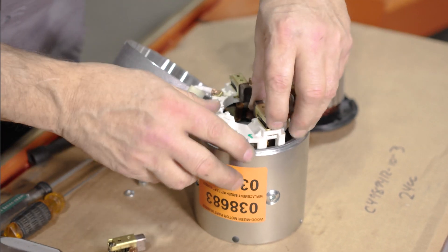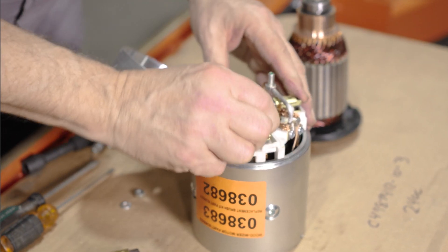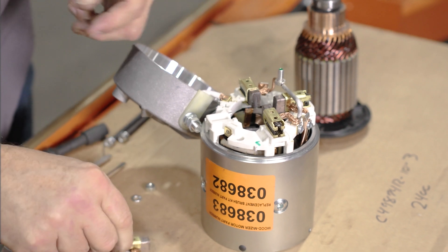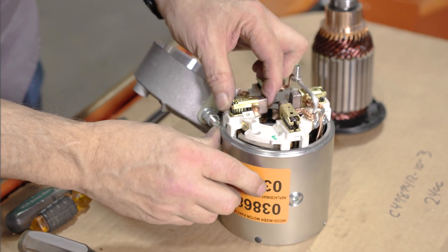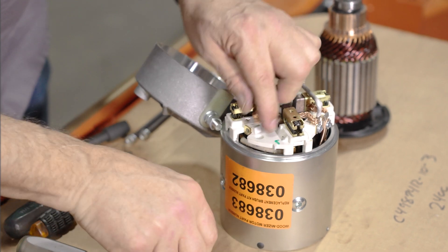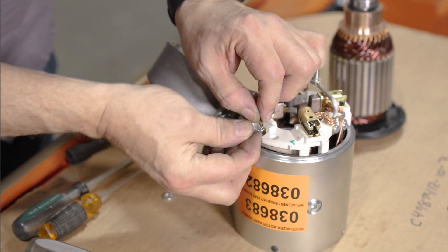You can take these out one at a time, and as you're doing that, replace it with the new ones. Simply slide them back in place and attach your wire.